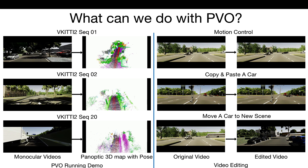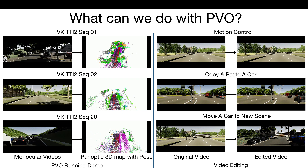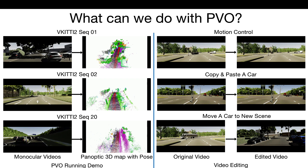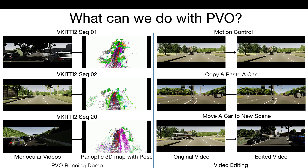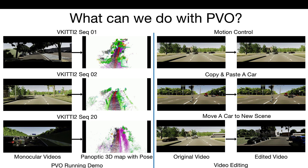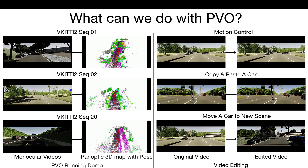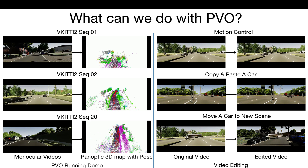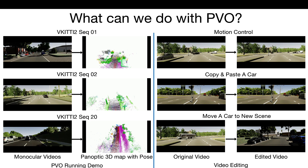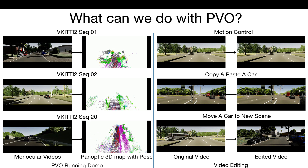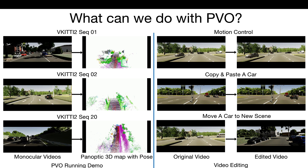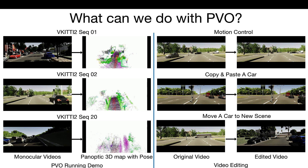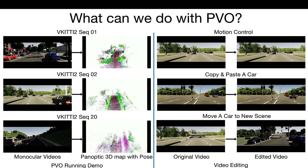The right side shows that we can apply PVO to video editing applications, such as manipulating the motion patterns of dynamic objects — acceleration, deceleration, reverse, etc. — copying and pasting a new car, or copying dynamic objects from the original video to a new scene.